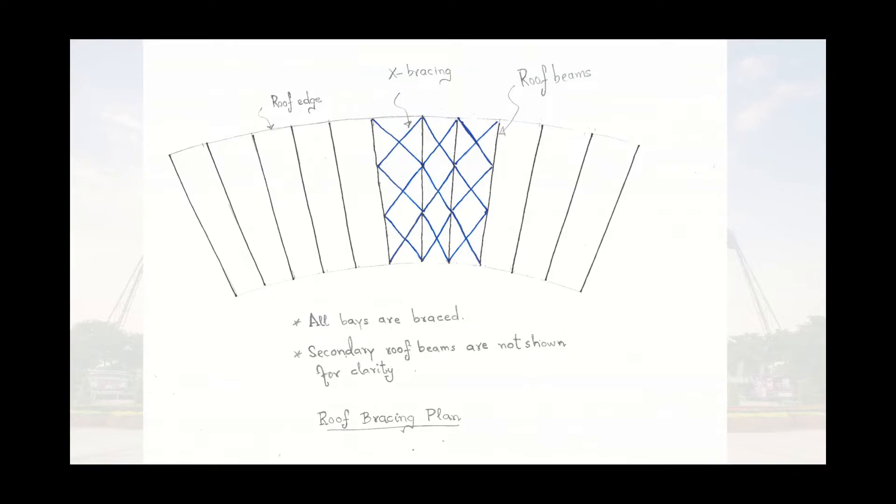Let's talk about the arrangement of members to transfer lateral loads. Starting with the roof, each bay of the stadium has cross-bracing as shown here in this diagram. The bay here refers to the space between two primary roof beams. These roof bracing members placed in the plan of the roof transfer the wind or seismic forces to the vertical bracing.